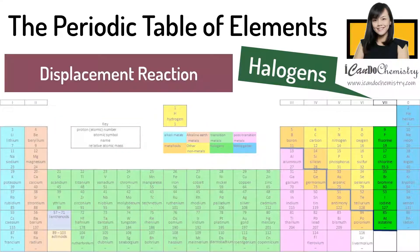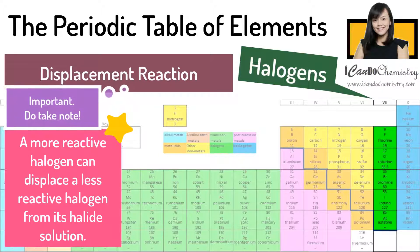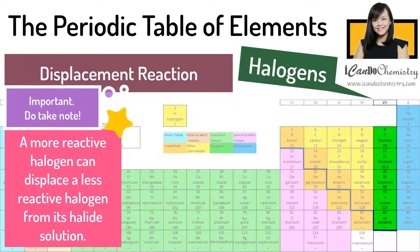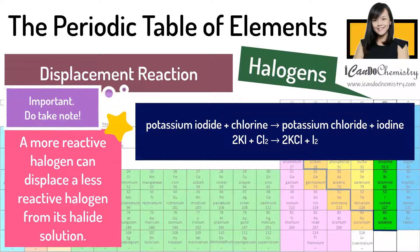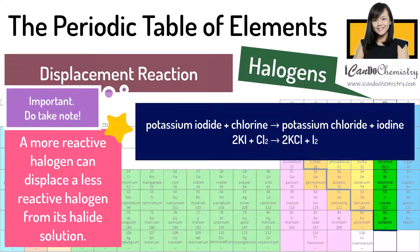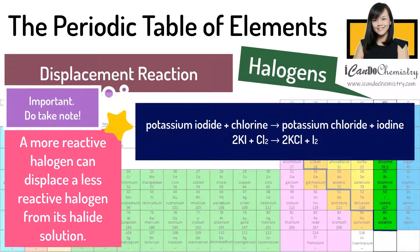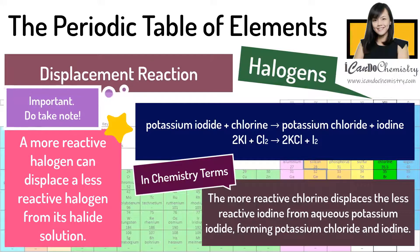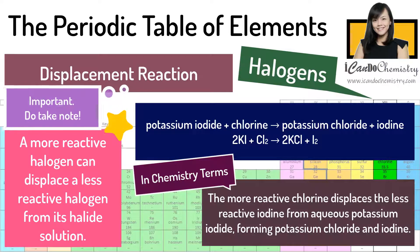The interesting reaction halogens can undergo is displacement reaction. A more reactive halogen can displace a less reactive halogen from its halide solution. For example, when chlorine is added to potassium iodide, the more reactive chlorine will take the place of iodine, forming potassium chloride and leaving iodine back as an element.